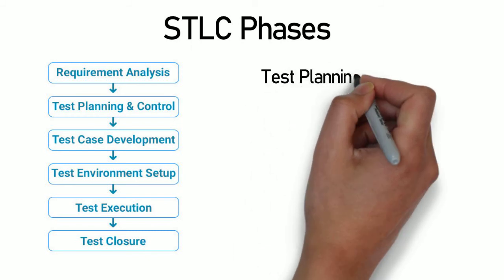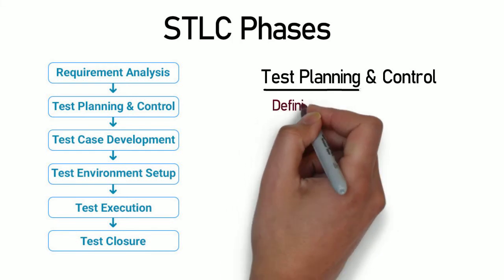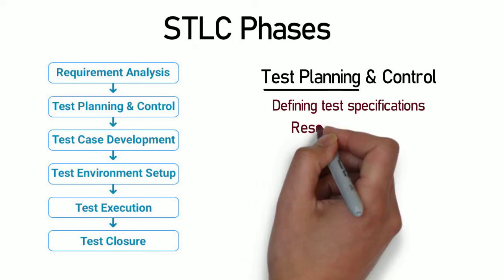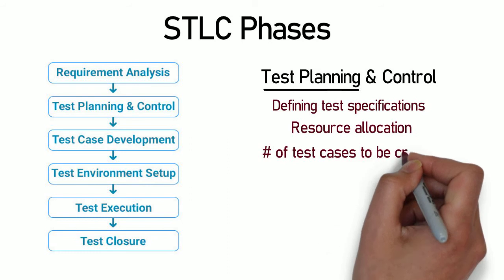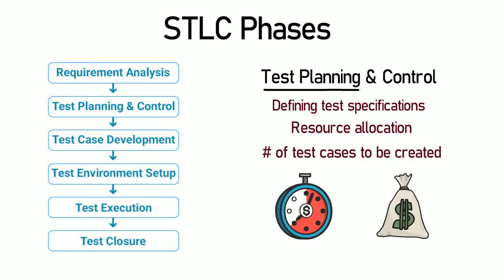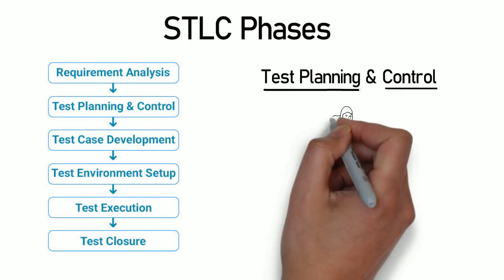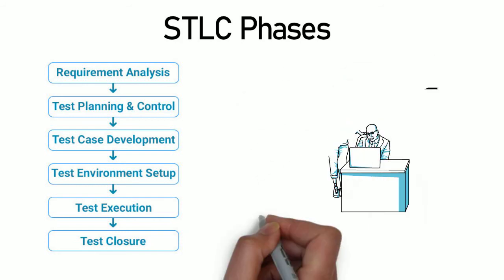Test Planning and Control: test planning is one of the most important activities in the test process. It involves defining the test specifications in order to achieve the project requirements. Here, the resource allocation for carrying out testing, the number of test cases to be created, testing duration, and the cost gets finalized. Test control includes continuous monitoring of the test process with a set plan along with the escalation of any deviation to the concerned stakeholders.